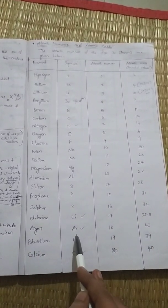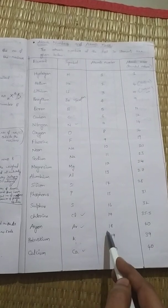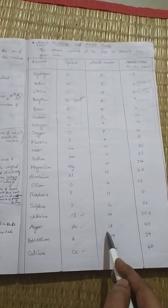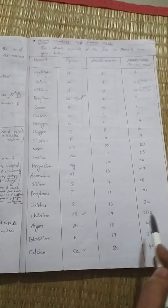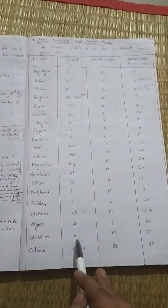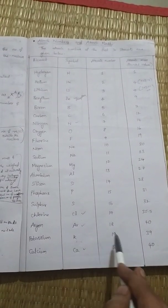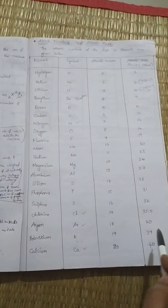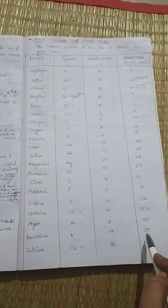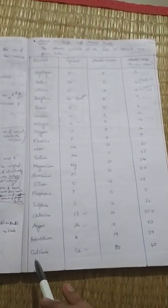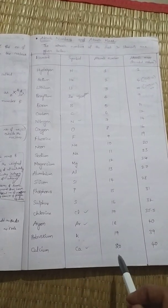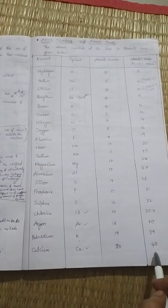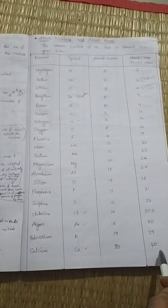Argon: symbol Ar, atomic number 18, atomic mass 40. Potassium: symbol K, atomic number 19, atomic mass 39. Calcium: symbol Ca, atomic number 20, atomic mass 40.